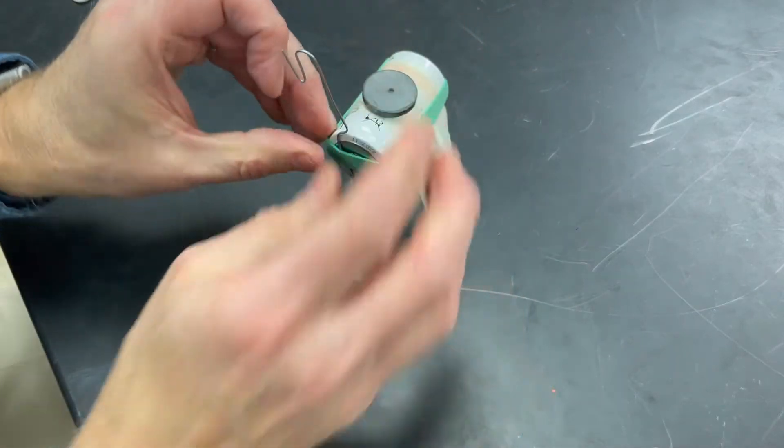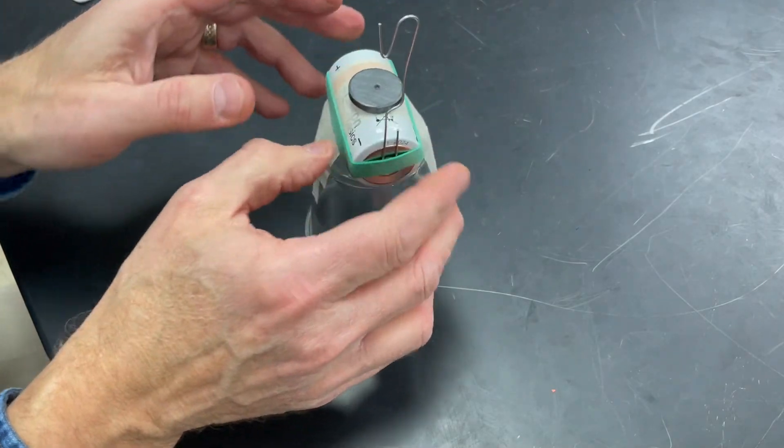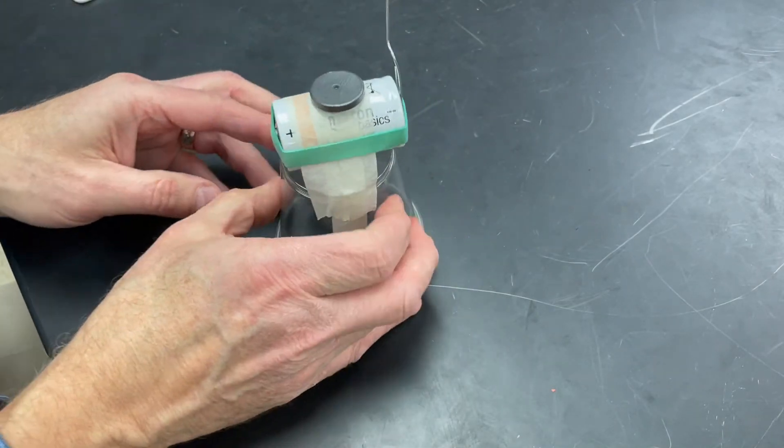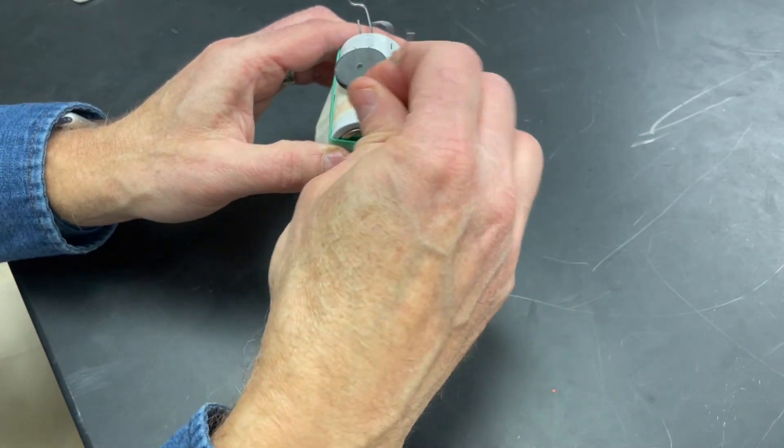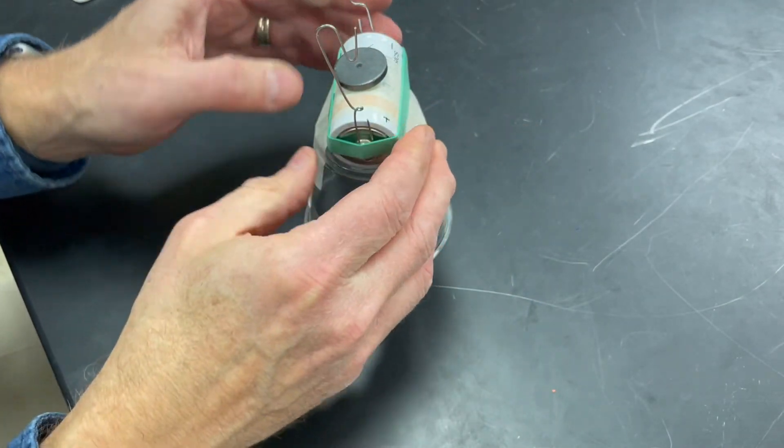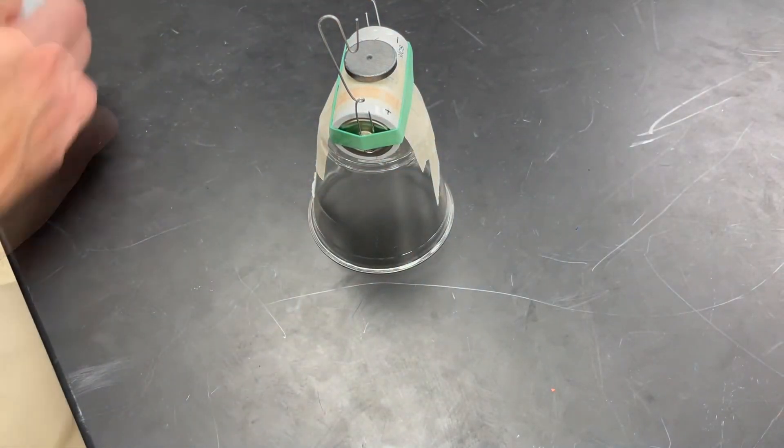We're going to tuck that paper clip underneath the rubber band so it's right against the end of the battery. And then put another paper clip at the other end exactly the same way. The two hooks should be straight across from each other, lined up with the magnet in the center.